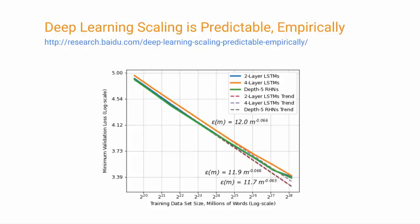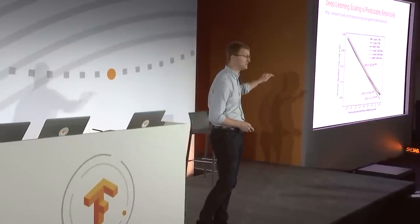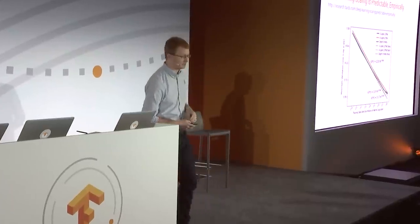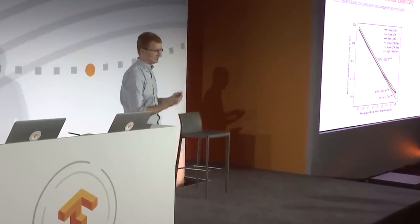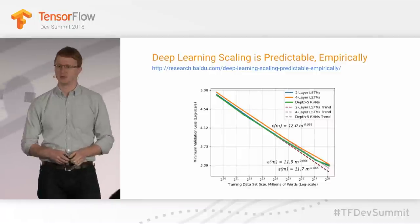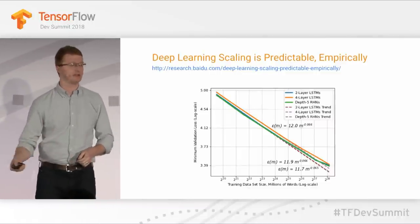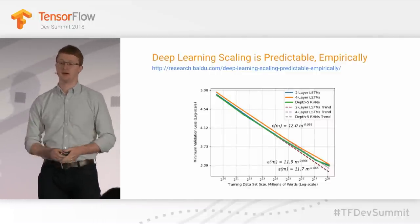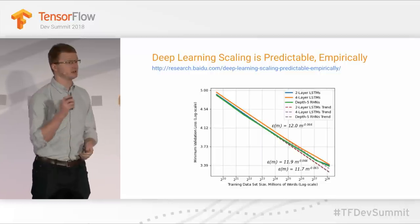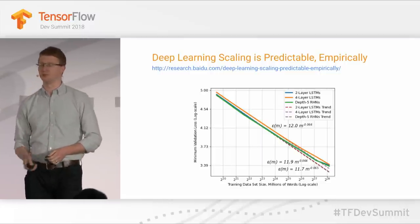I'm being slightly facetious here — if you look closely, the axes on this graph are actually logarithmic, not linear. So really, we don't need linearly increasing amounts of data; we need exponentially more data to keep improving our models. They found this trend holds not just for sequence-to-sequence work but also for images and translation across multiple different model types.